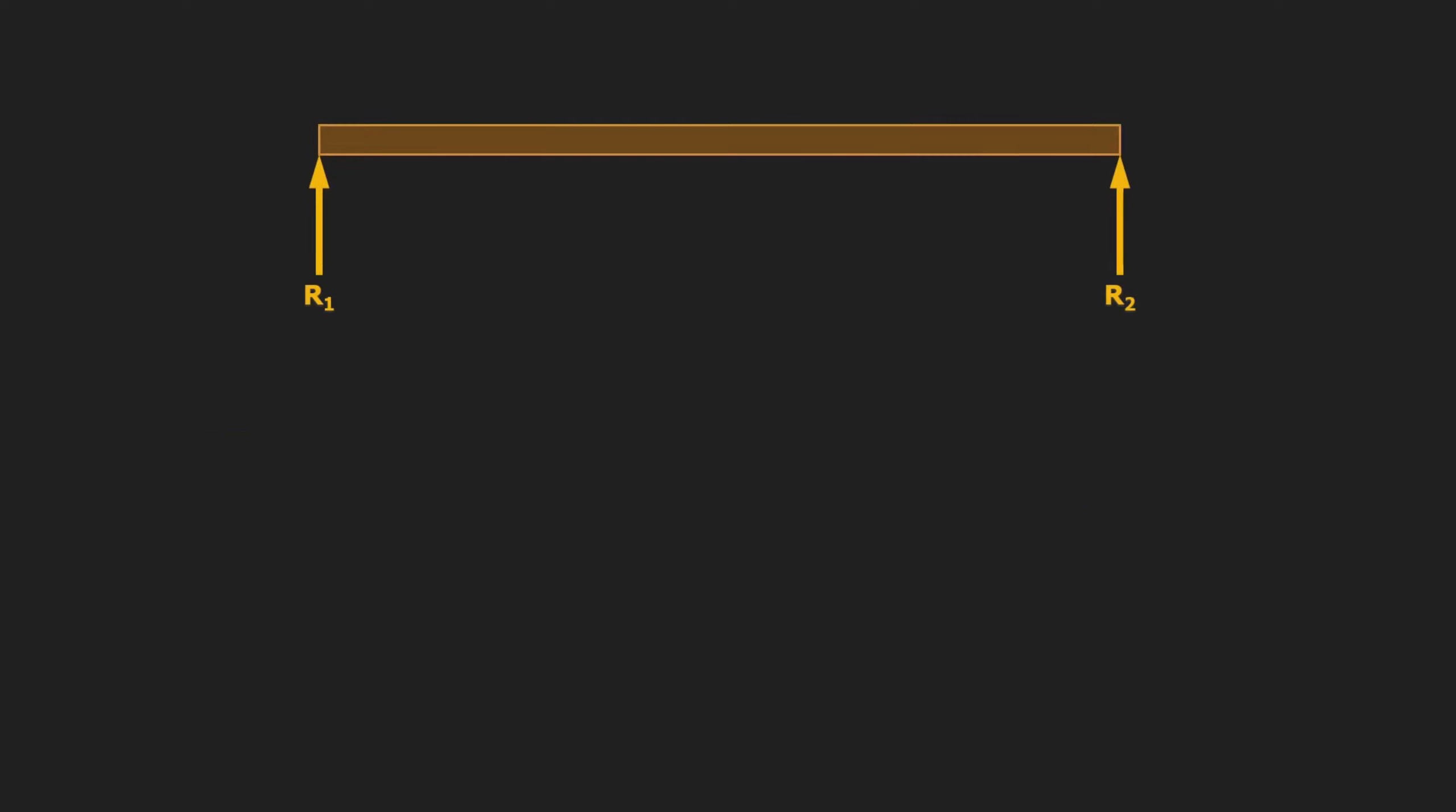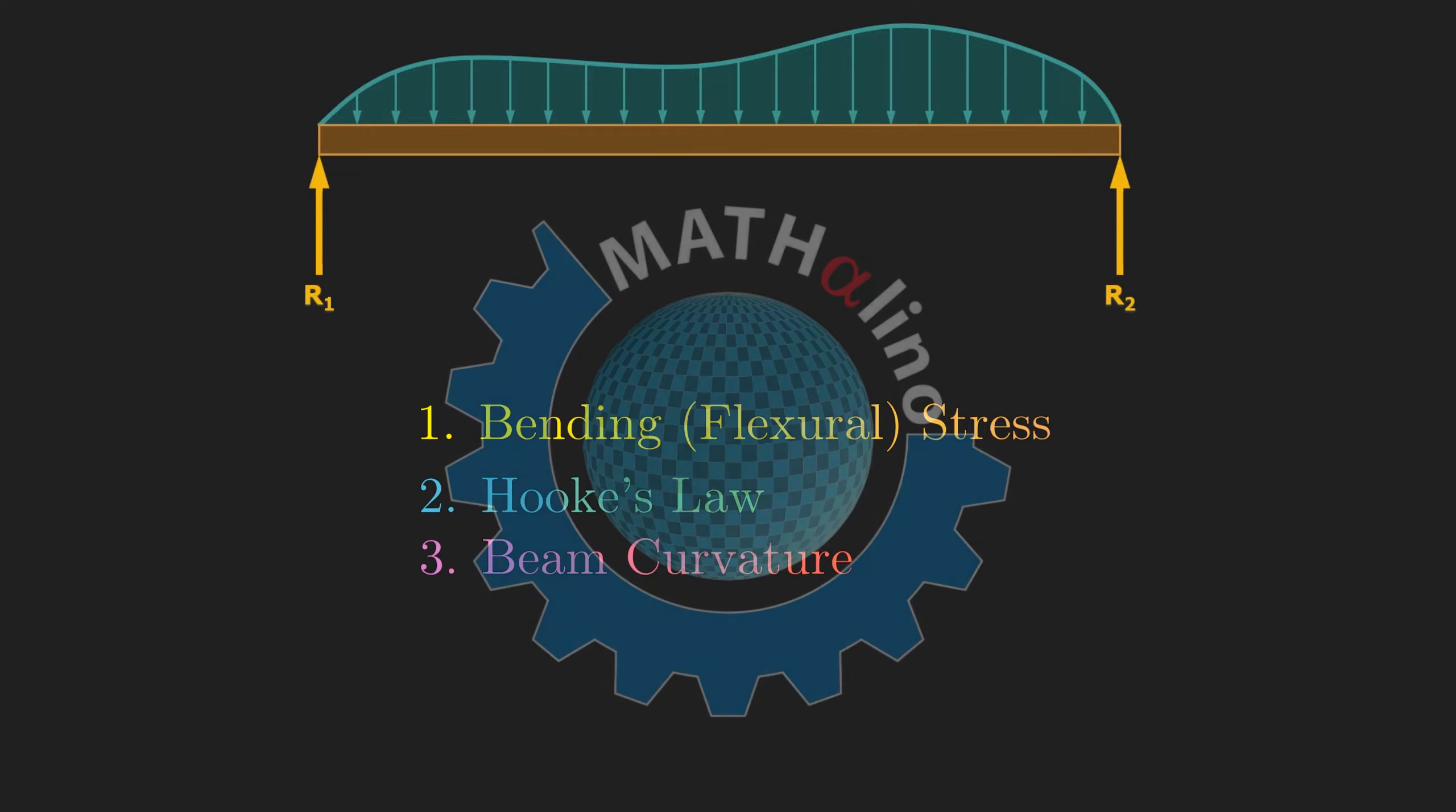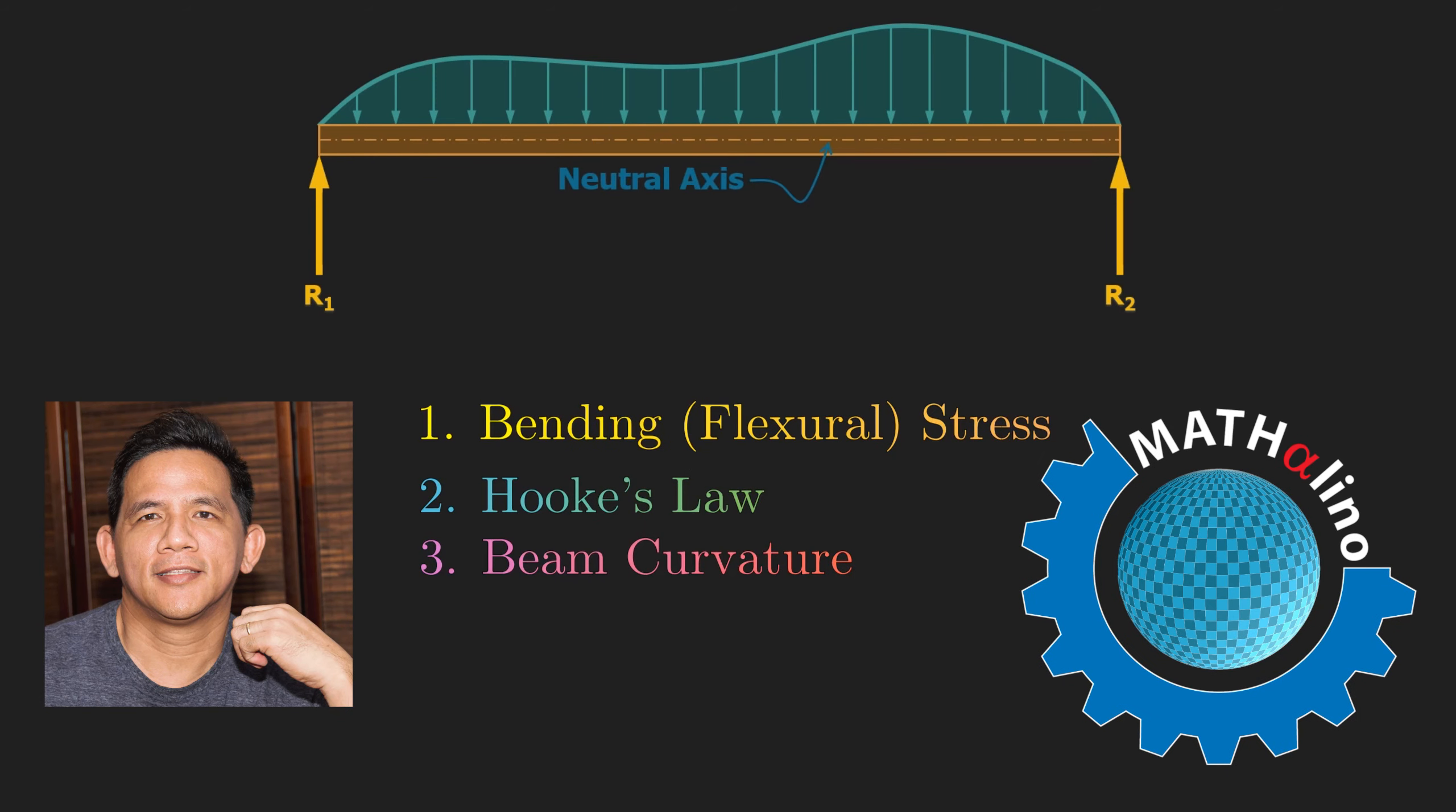If you are preparing for an examination involving bending stress of beams, make sure you understand three formulas: number one is the formula for bending stress which we call the flexure formula, number two is Hooke's law, and number three is the beam curvature. Good day mathalino, again this is Junvert. In this video, let us derive the formula for flexural stress.